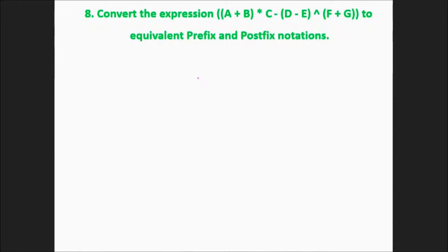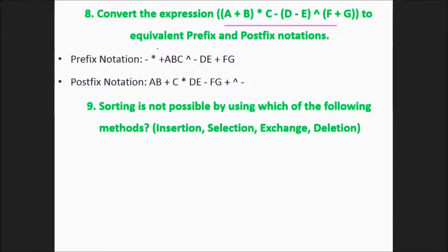Convert the expression ((A + B) ^ C - (D - E) * (F + G)) to equivalent prefix and postfix notation. In prefix, first we write the operator and then the operands. In postfix we write first the operands and then the operators.